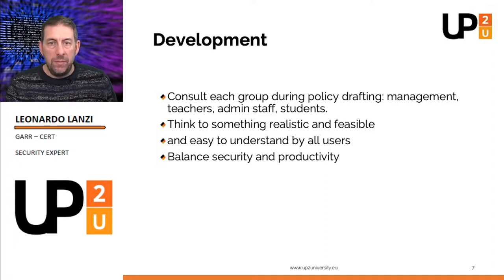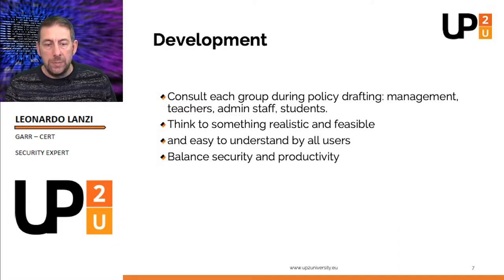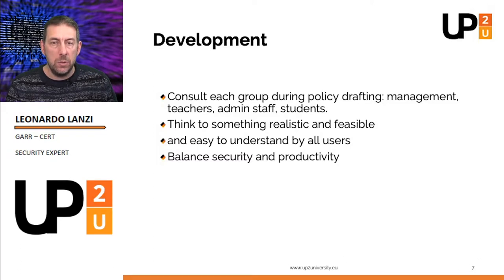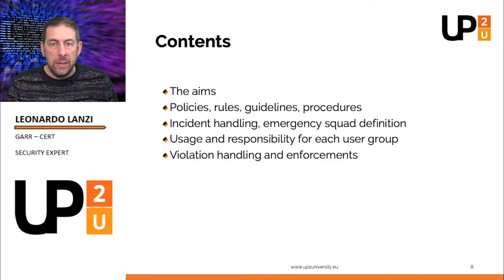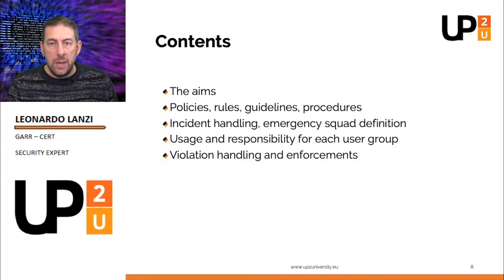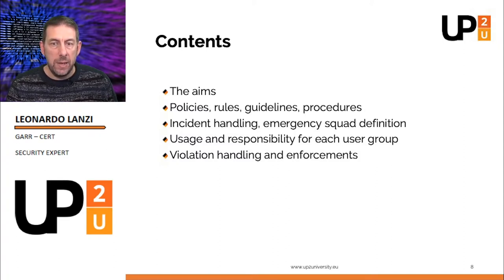Policy must be realistic and feasible to carry out, concise and easily understood by users — a balance between protection and productivity. Security measures don't have to obstruct the institutional work of the users. Regarding the contents, the ICT security policy should include at least: aims of the policy, rules, guidelines and procedures, incident handling and identification of responsible persons, usage and responsibility definitions for different user groups, and violation handling and enforcement.